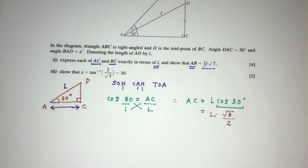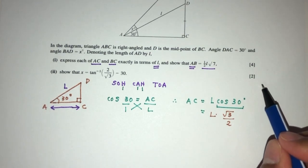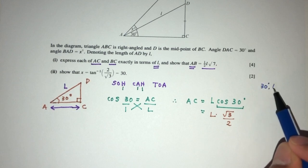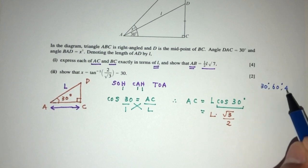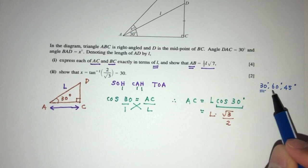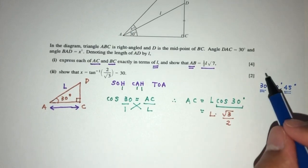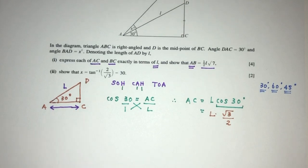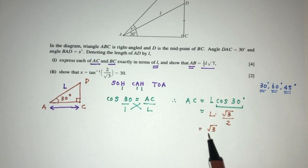Now we have to provide the exact value. You have to know the exact value of cos 30. I will recommend that you memorize these values. Cos 30 equals root 3 over 2, so AC equals L root 3 over 2. You guys have to know the exact values for the angles 30, 60, and 45. That is part one of the question.